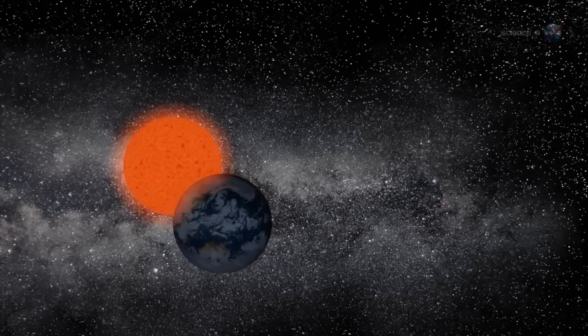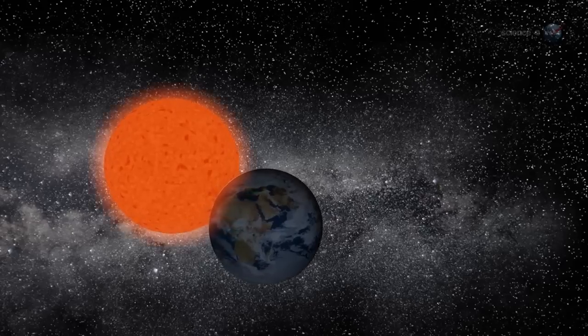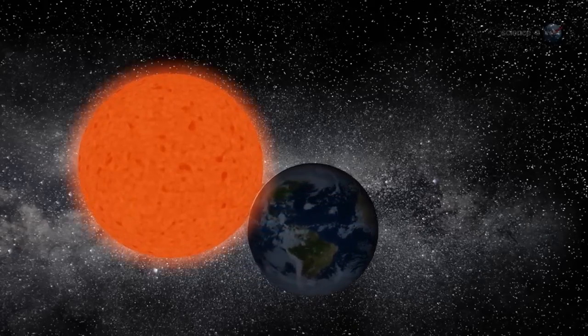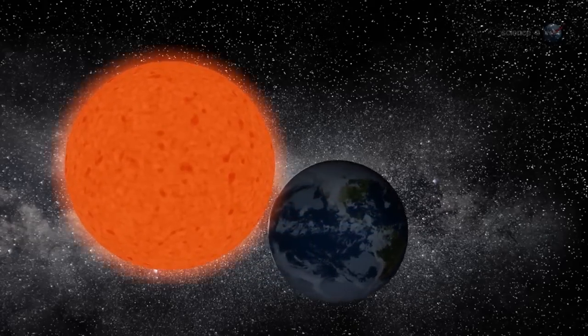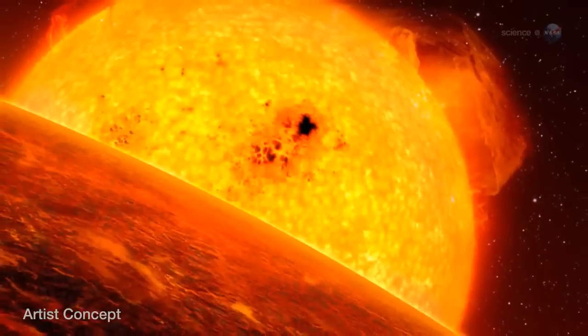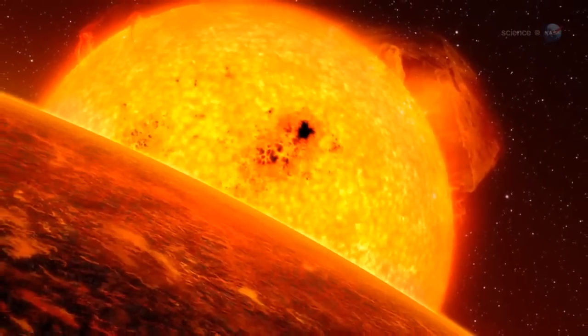This could happen if solar winds carry away a significant fraction of the Sun's mass in the years leading up to the red giant phase. On the other hand, the Sun might expand so quickly that our planet has no chance to escape. Earth would get caught in the Sun's rapidly advancing atmosphere and spiral inward to oblivion.